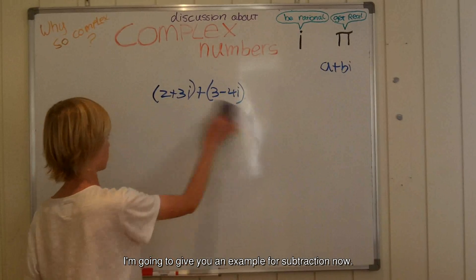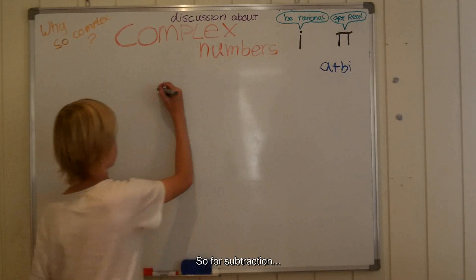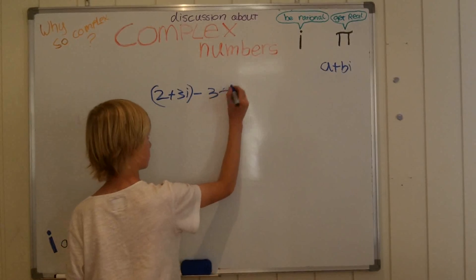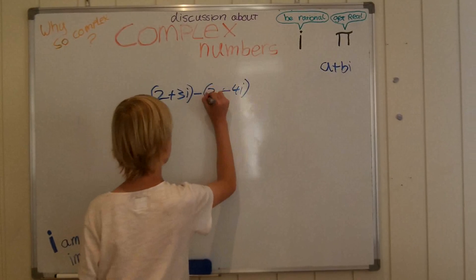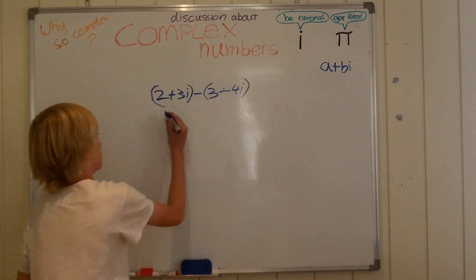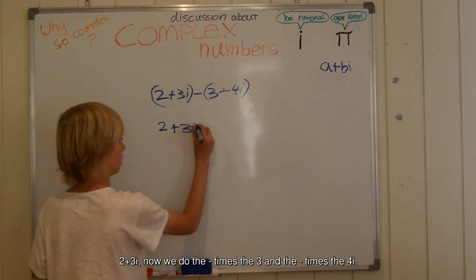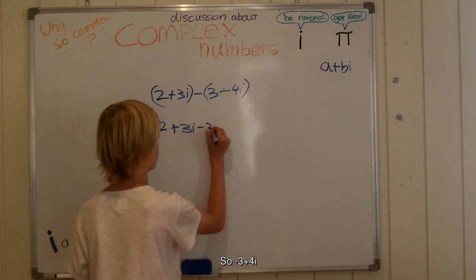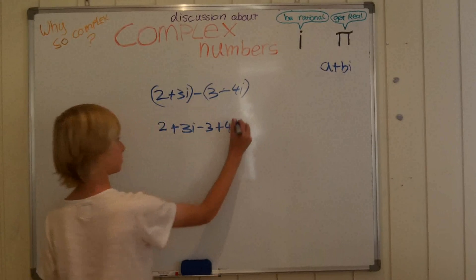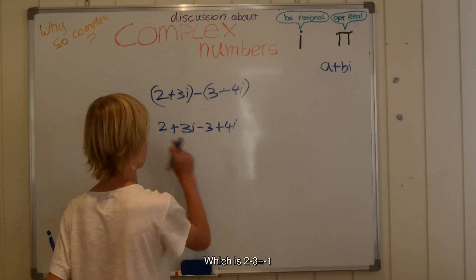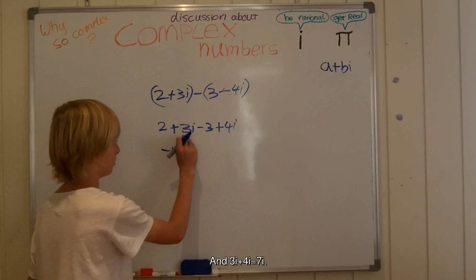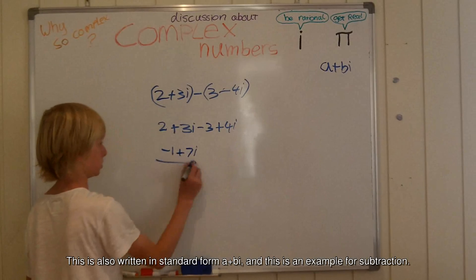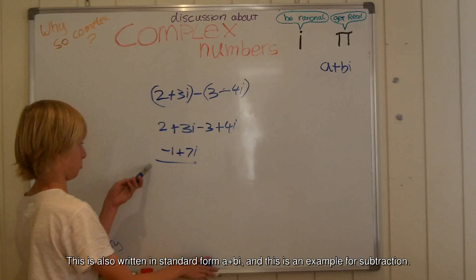I'm going to give you an example for subtraction now. We need to expand the brackets: 2 plus 3i minus times 3 and minus times minus 4i, giving us minus 3 and plus 4i. Simplifying: 2 minus 3 equals minus 1, and 3i plus 4i equals 7i. So the result is minus 1 plus 7i. This is also written in standard form a plus bi.